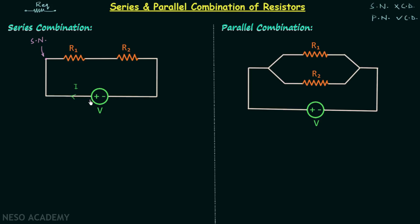If I is the current leaving the positive terminal of the voltage source, it will enter the simple node. Since there is no current division at this node, the same current I leaves the node. So I is the current entering resistance R1, and therefore there will be a voltage drop across R1 with magnitude I·R1, with polarity plus to minus. At the next common point, R1 and R2 are connected — this is another simple node with no current division, so I is the current through R2.